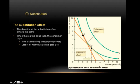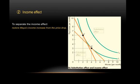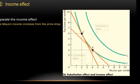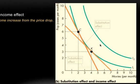As the relative price of movies falls, she ends up buying more movies, which are relatively cheaper now, and less pop, which is more expensive. To separate out the income effect, we move from point K and give Maya back all the income increase she gained from the price drop in movies, such that she now moves to the new indifference curve I2.